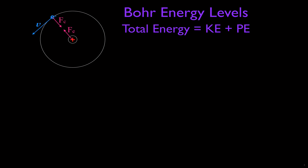To get the total energy — the energy for the energy levels in a hydrogen atom — we have to get the kinetic energy and add that to the potential energy. We have to add the kinetic and the potential energy together. And we have our hydrogen atom over here.